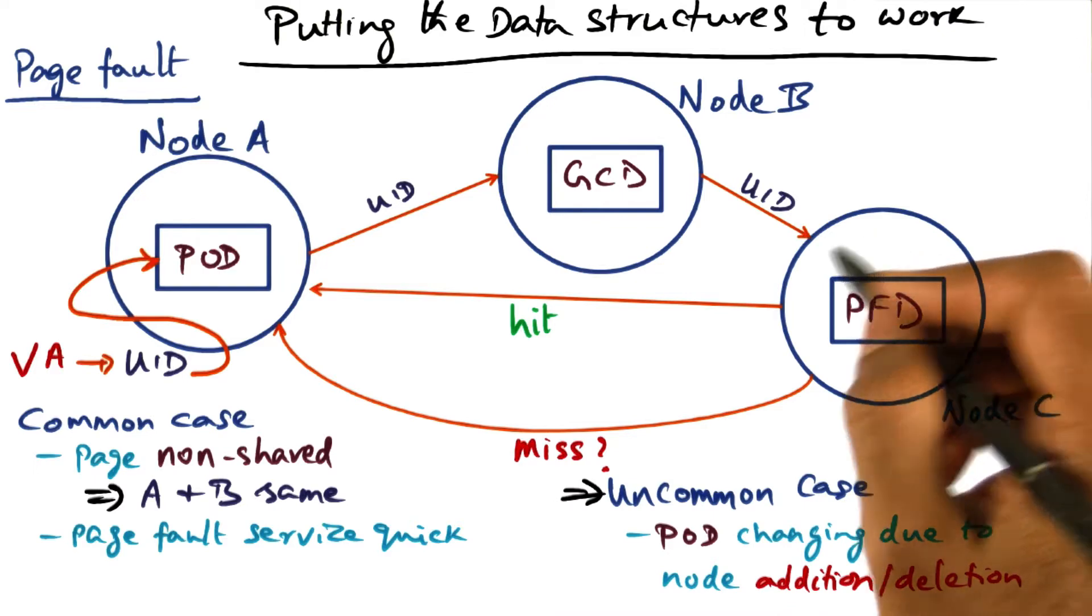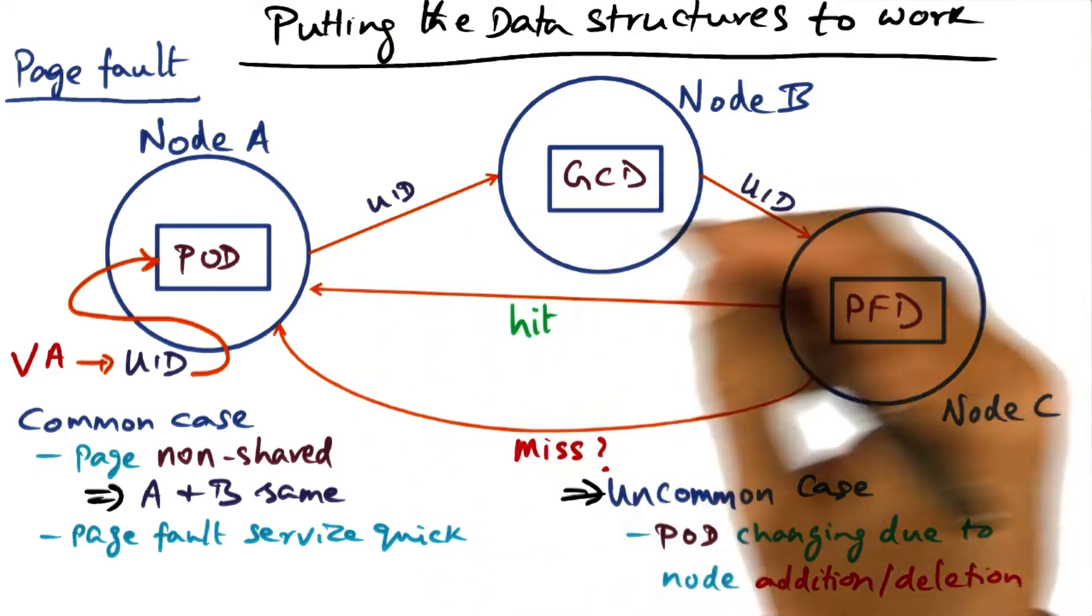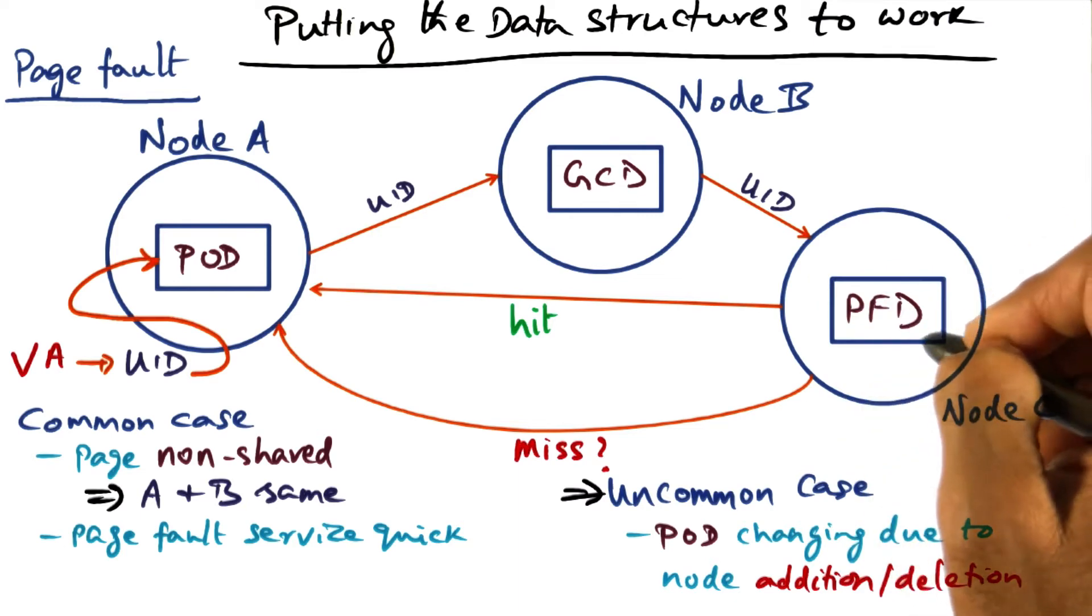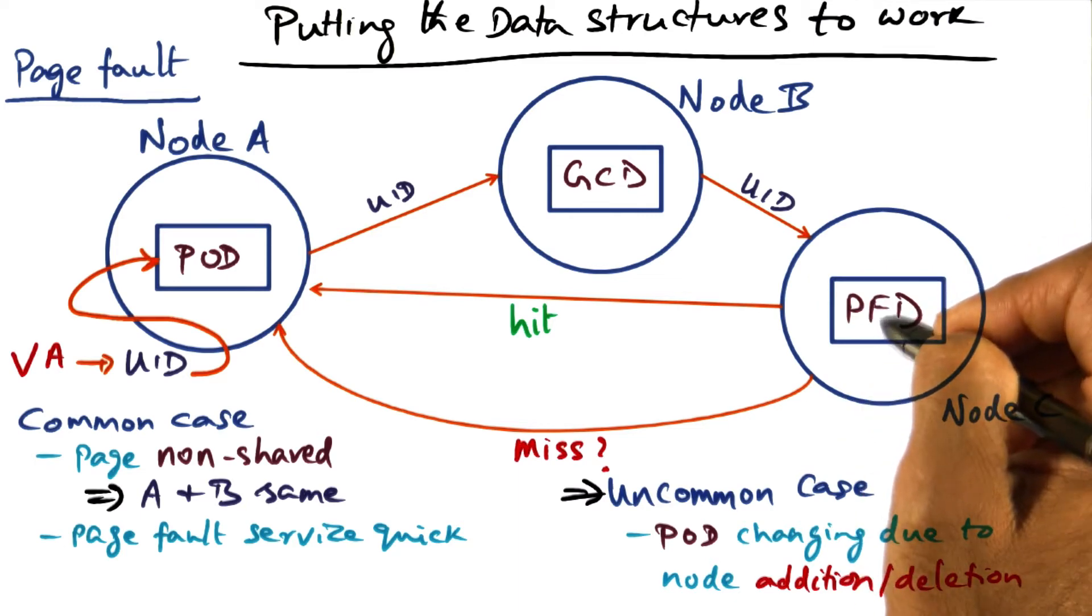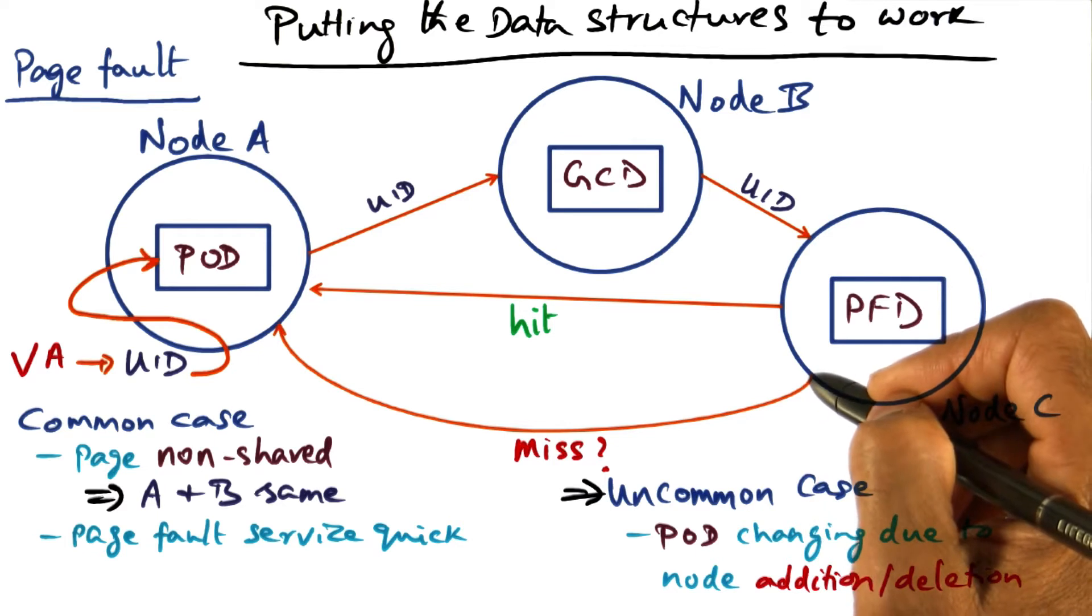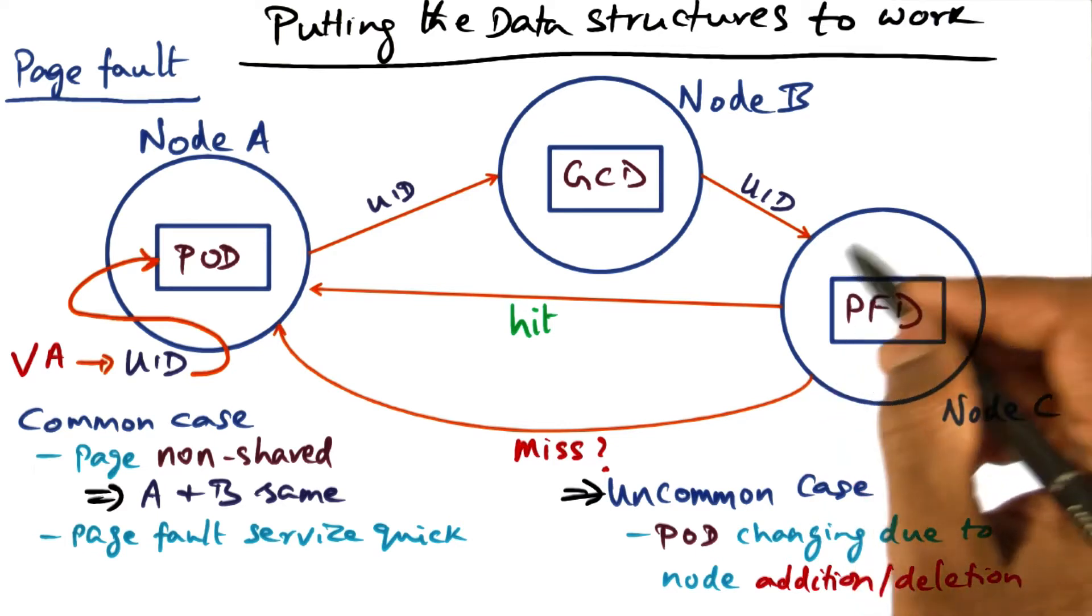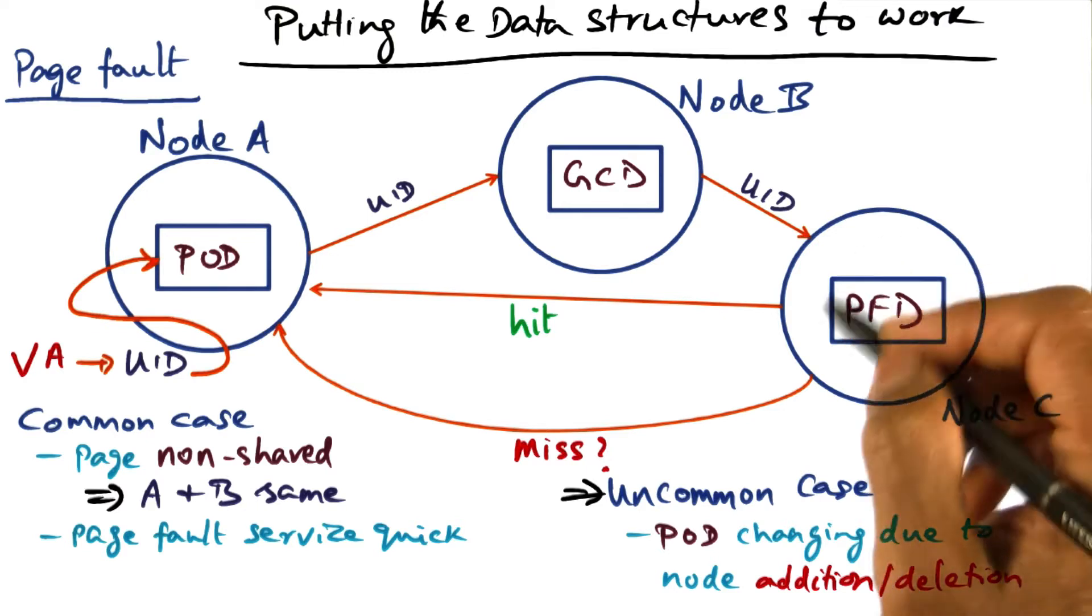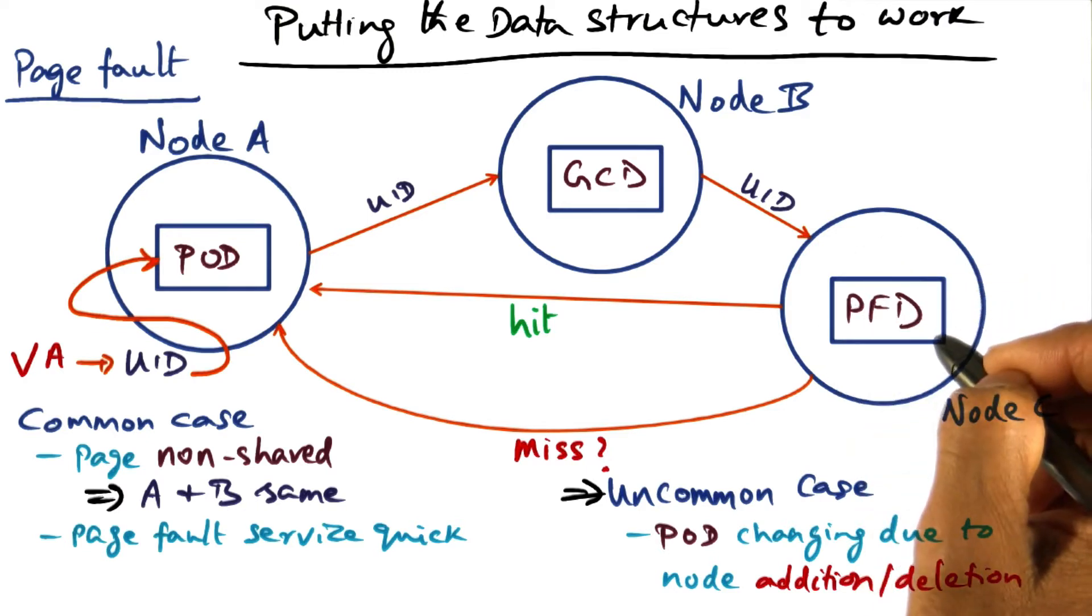One case is, let's say, while this node was sending this request over, this node has made a decision to evict that page that corresponds to this UID, because it had to make space for itself. In that case, that UID may have been thrown away from the PFD.